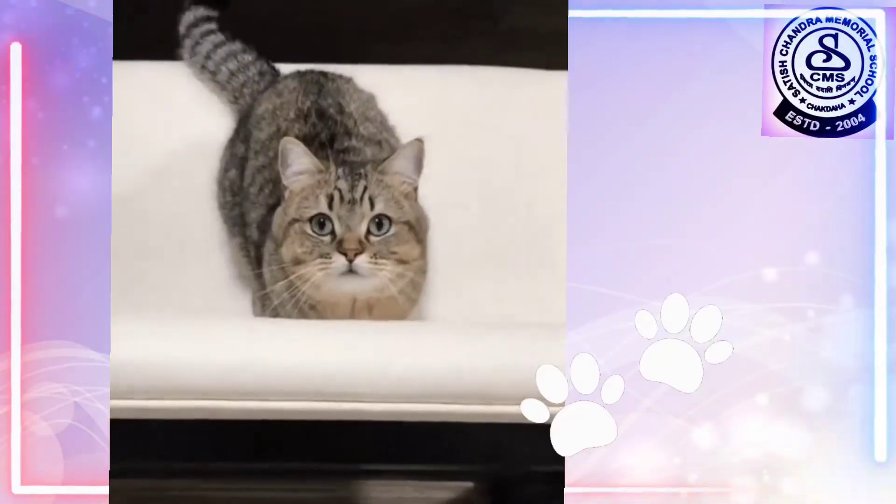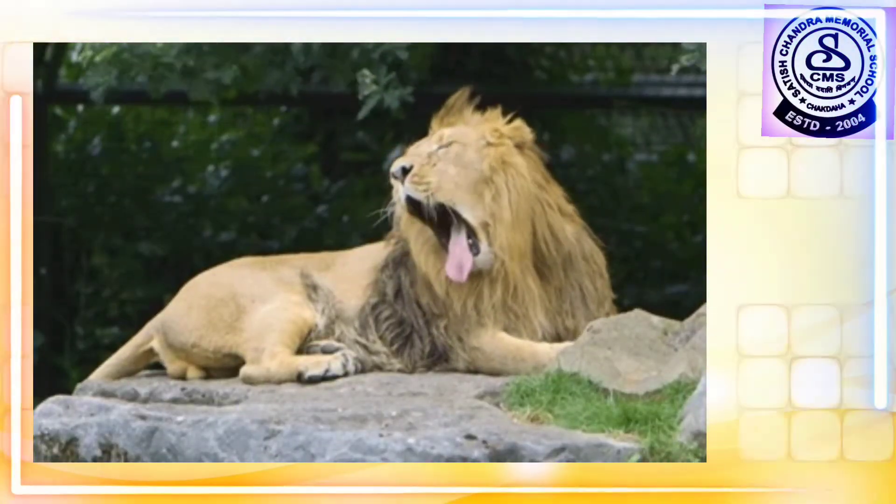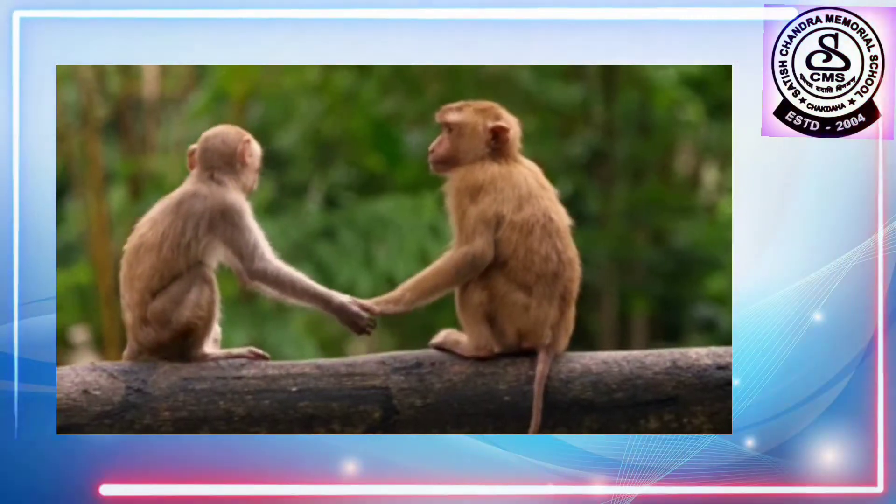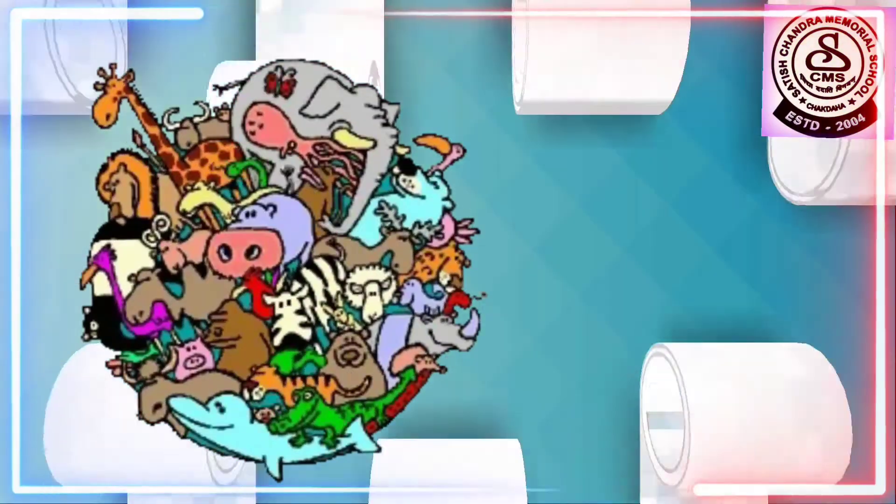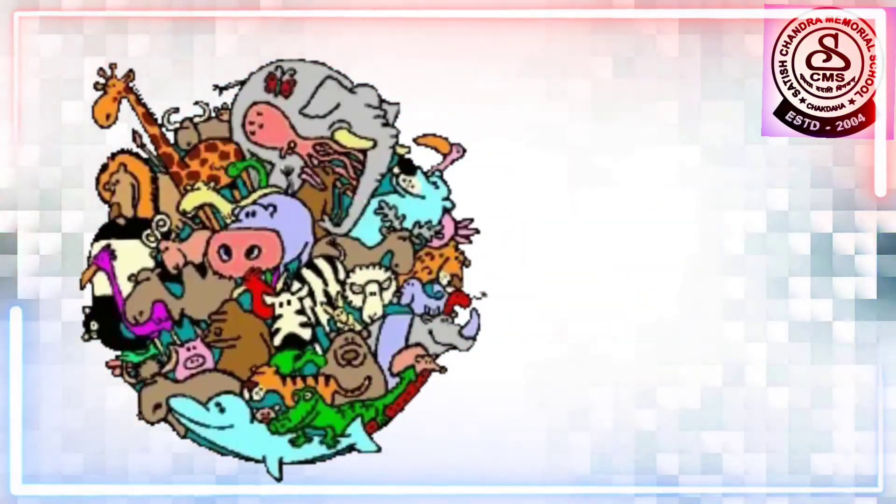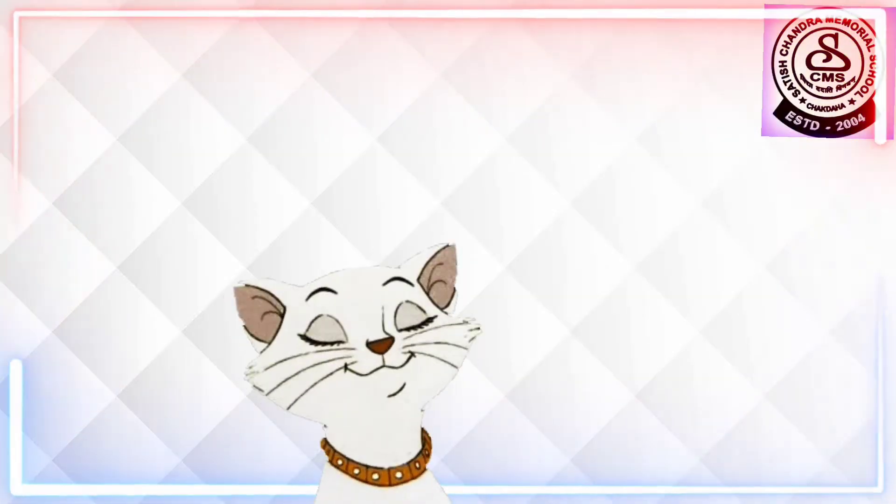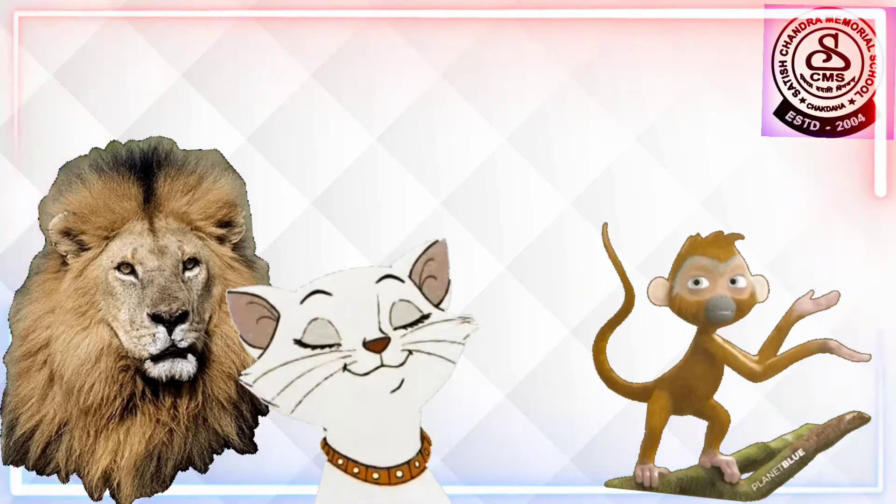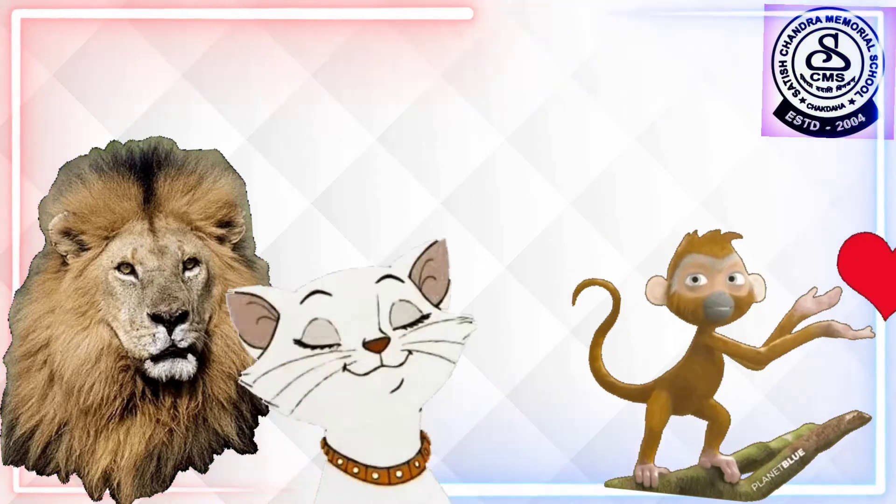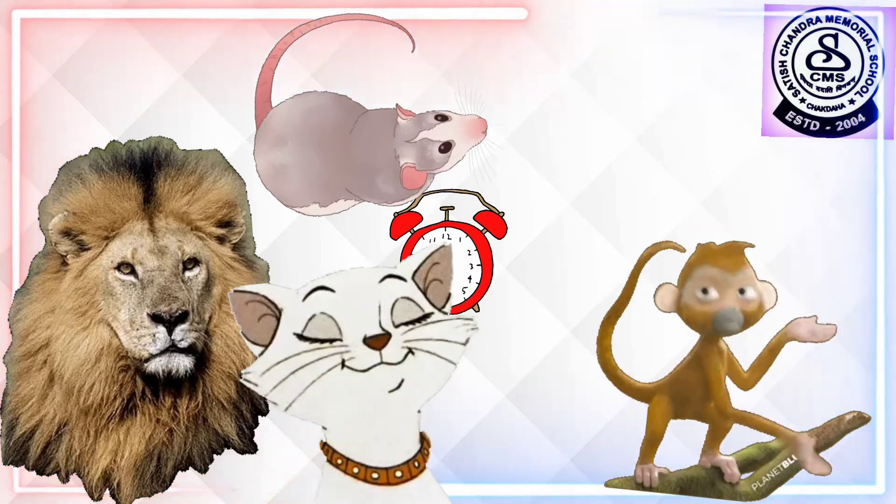This is cat. This is a lion. This is monkey. And this is a rat. All these are animals. Again, I am repeating. This is a cat. This is a lion. This is a monkey. And this is a rat. Now, you will get 15 seconds.